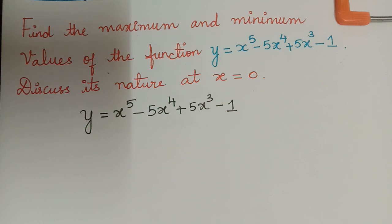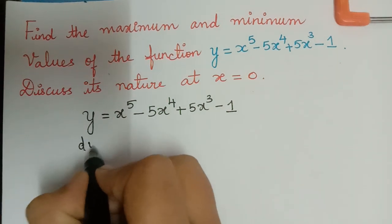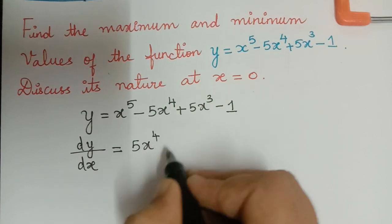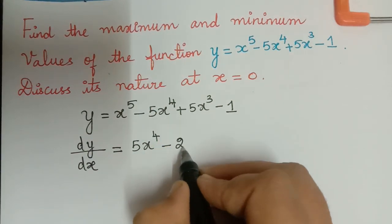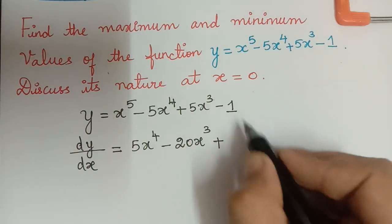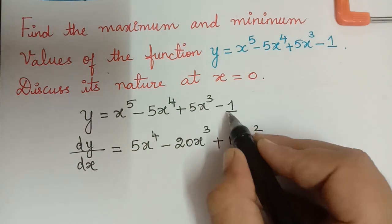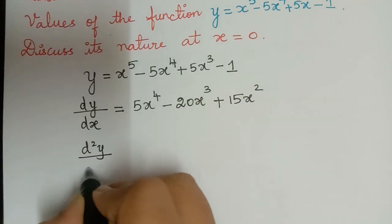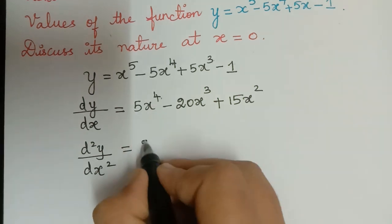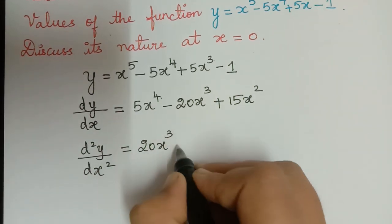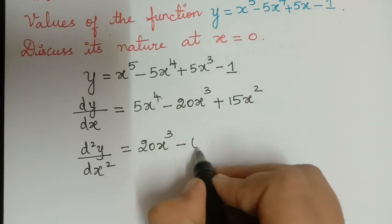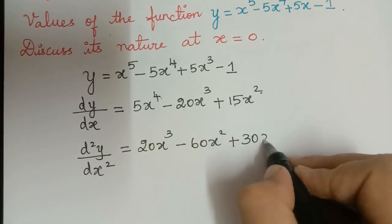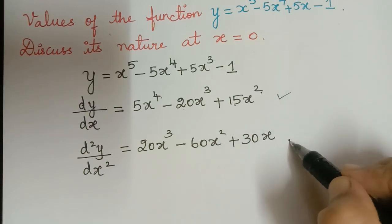We have y equal to x⁵ - 5x⁴ + 5x³ - 1. First we find dy/dx, which equals 5x⁴ - 20x³ + 15x². The constant term becomes 0. Next we find d²y/dx², which equals 20x³ - 60x² + 30x. So we have now found both dy/dx and d²y/dx².